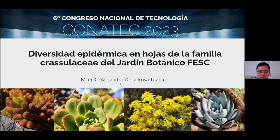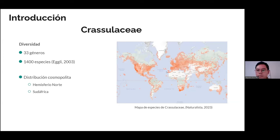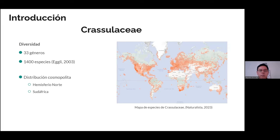Primero que nada les voy a platicar un poco sobre la familia Crassulaceae. Esta familia está representada por cerca de 33 géneros a nivel mundial; algunos autores hablan de hasta 35 y cerca de 1,400 hasta 1,500 especies, dependiendo de los autores. Su distribución principalmente es cosmopolita. Aquí tenemos del lado derecho un mapa de especies de la familia Crassulaceae, donde podemos ver específicamente que en el hemisferio norte se encuentran bien representadas.